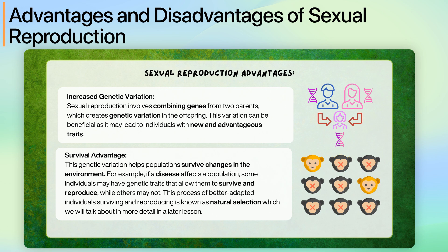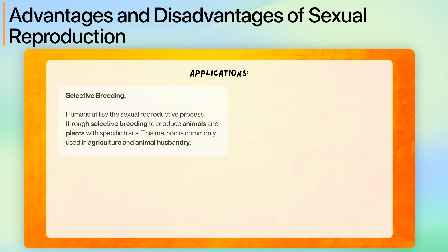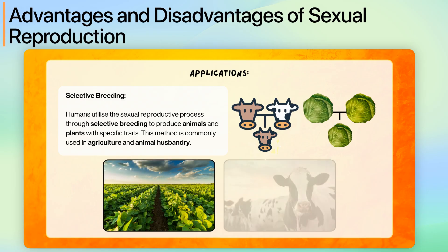Sexual reproduction also has practical use in selective breeding. Humans utilise the sexual reproductive process through selective breeding to produce animals and plants with specific traits. This method is commonly used in agriculture and animal husbandry.